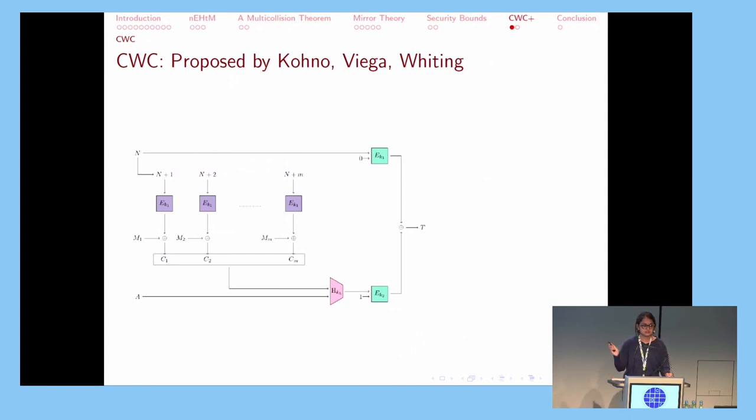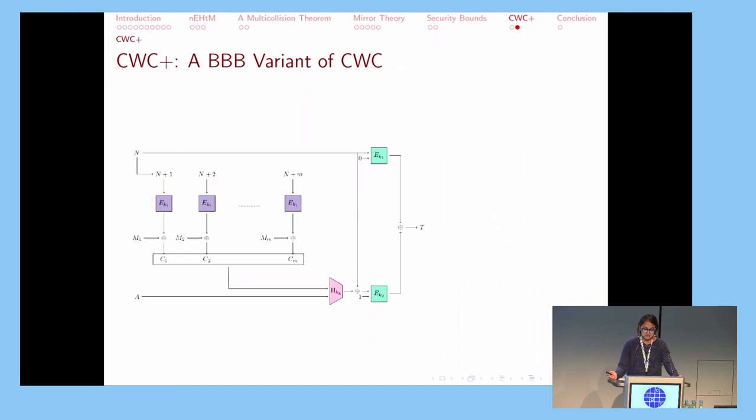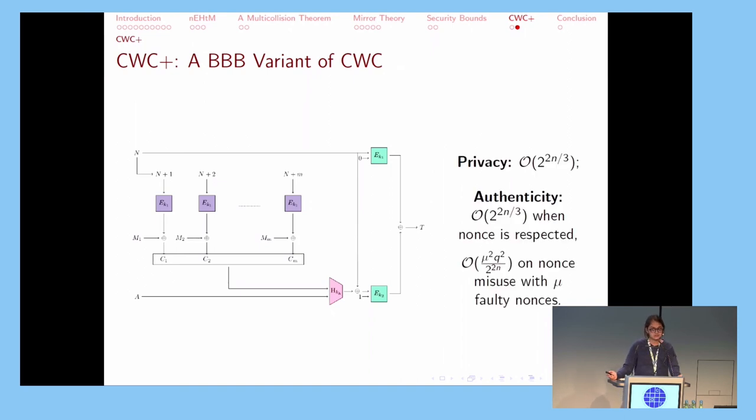Finally, we demonstrate our AE scheme, which is based on the CWC construction. This has beyond birthday bound privacy. However, its authenticity is broken on nonce misuse, whereas our construction has beyond birthday bound privacy as well as beyond birthday bound authenticity, which gracefully degrades on nonce misuse.